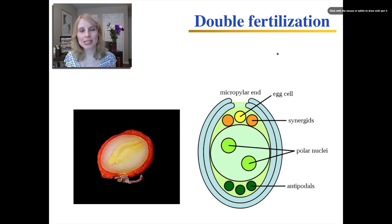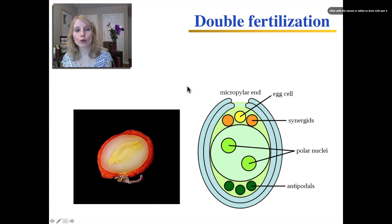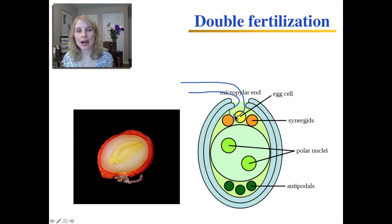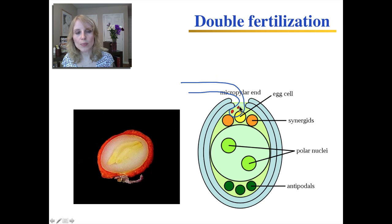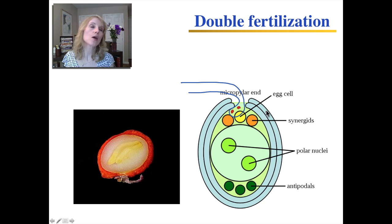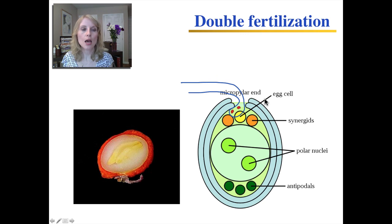In the last part of this lesson, you learned about how the pollen tube grows towards the ovule. Now remember, the pollen tube has two sperm inside. What happens with the two sperm? It's something called double fertilization.